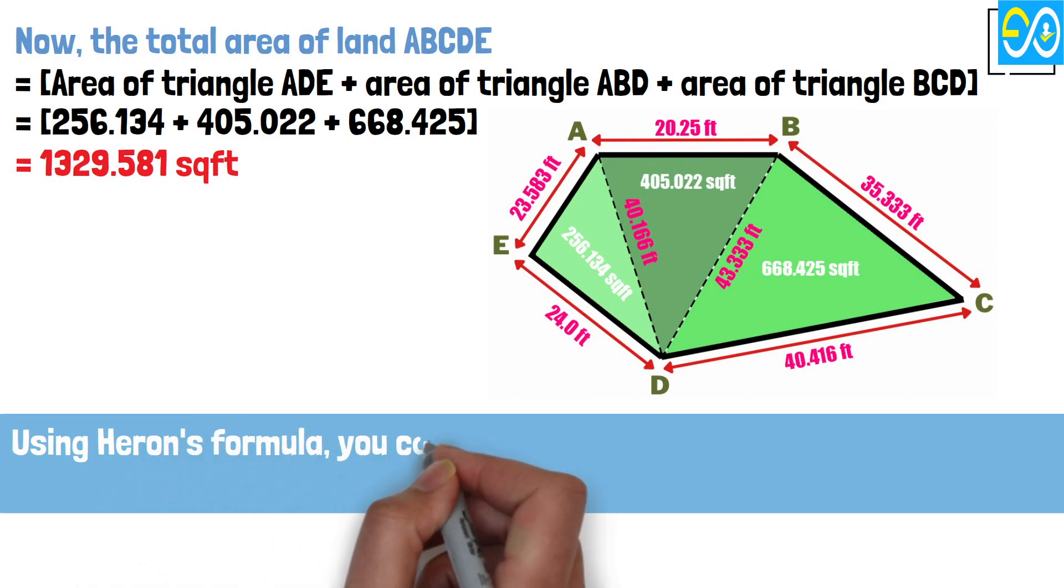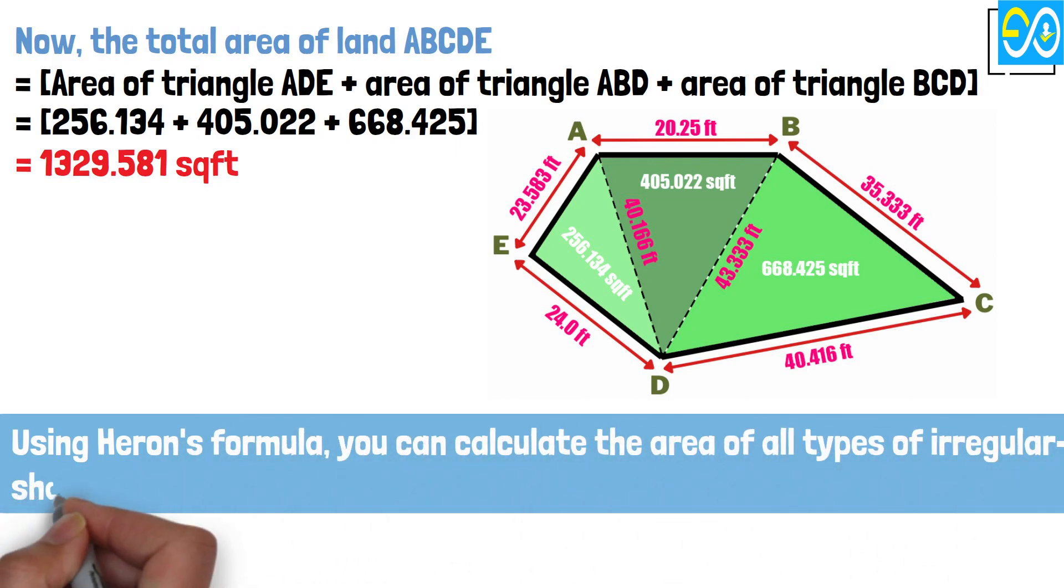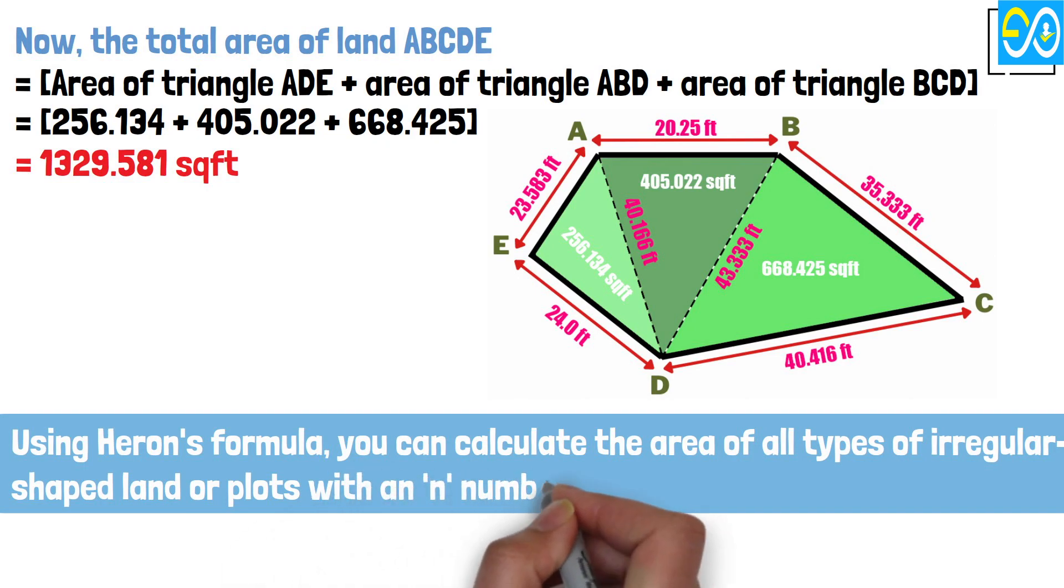Note, using Heron's formula, you can calculate the area of all types of irregular-shaped land or plots with any number of sides.